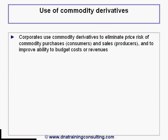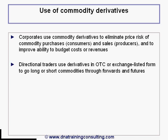Corporates use commodity derivatives to eliminate the price risk of their commodity purchases in the case of consumers, and sales in the case of producers, and to improve their ability to budget costs or revenues going forward. Directional traders use derivatives in OTC or exchange-listed form to go long or short commodities through forwards, futures and options.